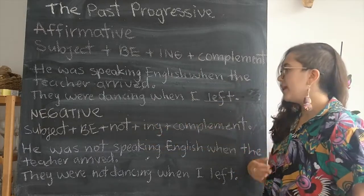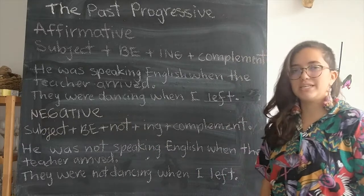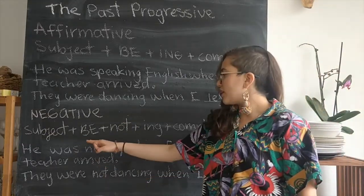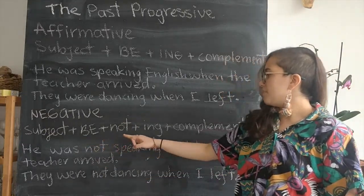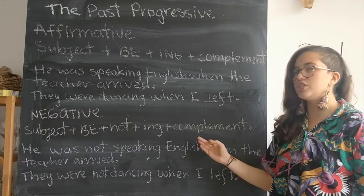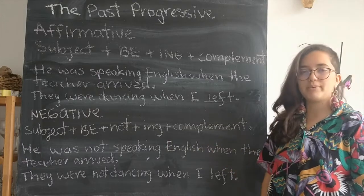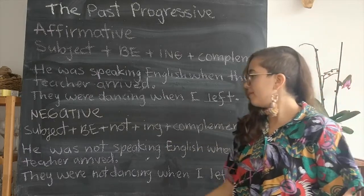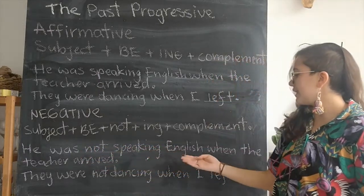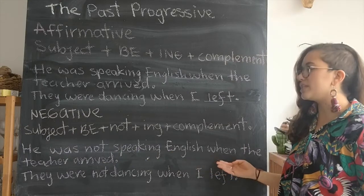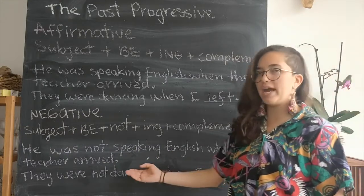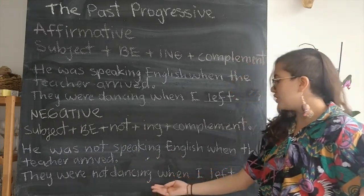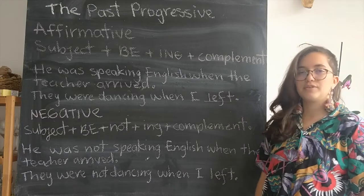With negative sentences, we say: subject plus 'be' plus 'not' plus -ing plus complement. So we would say: 'He was not speaking English when the teacher arrived.' 'They were not dancing when I left.'